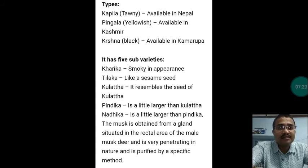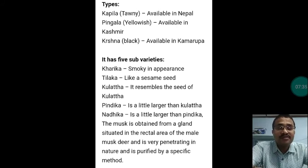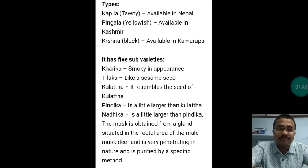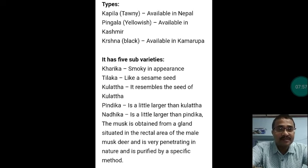From Ayurvedic classics, Kasturi has been typed into three varieties: Kapila — tawny color, available in Nepal; Pingala-Kama — yellow in color, available in Kashmir; and Krishna — black in color, available in Kamrup, Assam. The Krishna (Kamrupiya) variety is considered superior among all. Kharika has been subdivided into five sub-types: Kharika (smoky in appearance), Tiloko (like a sesame seed), Kulattho (resembles the seed of Kulattha), Pindika, and Nadika (a little larger than Pindika).